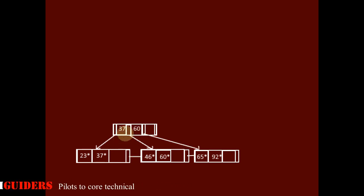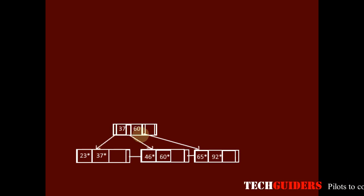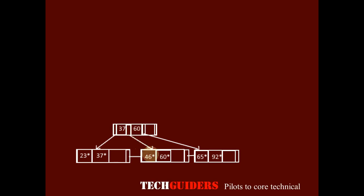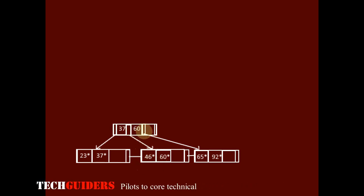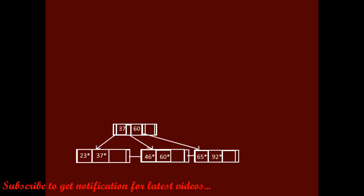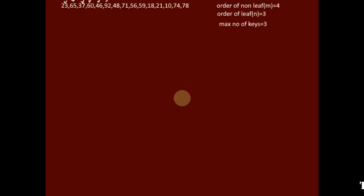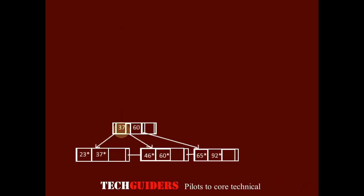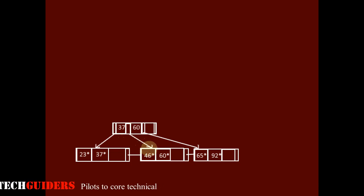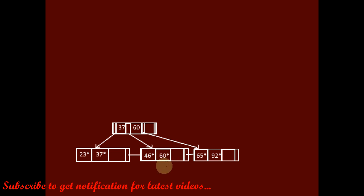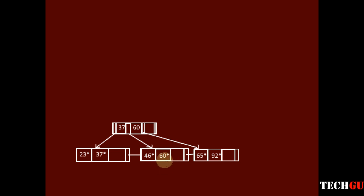Every entry to the left of 37 is less than or equal to 37, and to the right of 37 is greater than 37. Entries less than or equal to 60 are kept to the left of 60, and entries greater than 60 are kept to the right. Next, we insert 48. 48 is greater than 37, so follow the right pointer. 48 is inserted after 46, and there is enough space in this leaf node since it can hold a maximum of 3 keys.